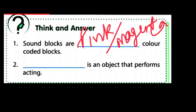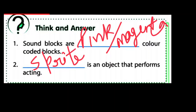The second answer: dash is an object that performs acting. Korn object hota hai jo aapki acting perform karta hai? Obviously, ek object hai — isko hum Sprite bolte hain. Wahi aapki action ko perform karta hai. You have to write Sprite — S-P-R-I-T-E. Sprite is an object that performs acting. Jo bhi aap script area mein action denge, woh Sprite aapka acting karega.